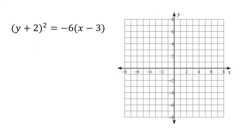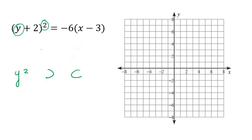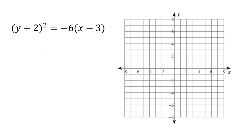Here's our last example. Step one: x squared or y squared? It's y that is squared — the x has no square. So this is definitely left or right. This one is negative, so negative means it faces left, positive means it faces right. So we'll have a graph going to the left.